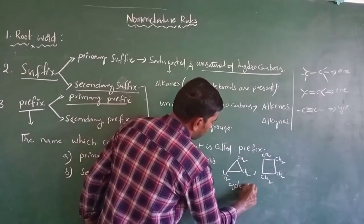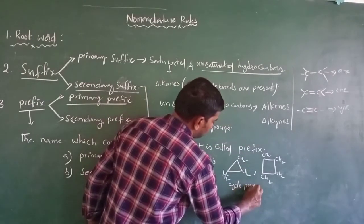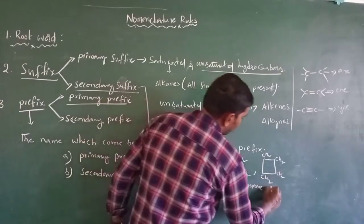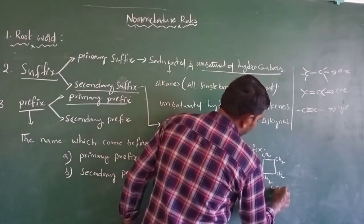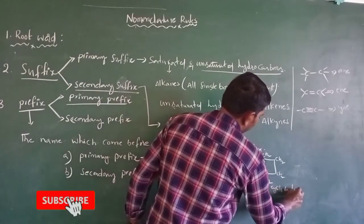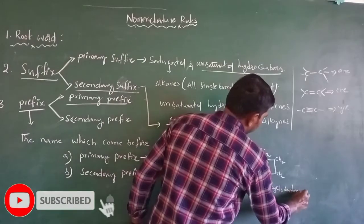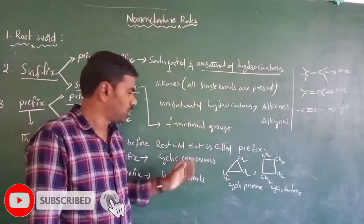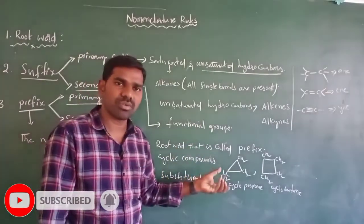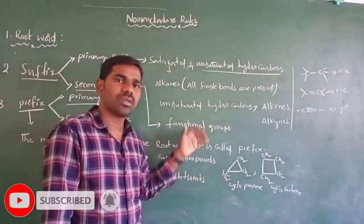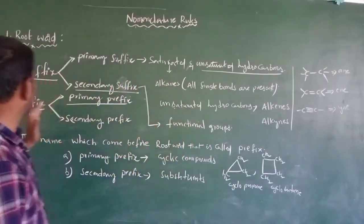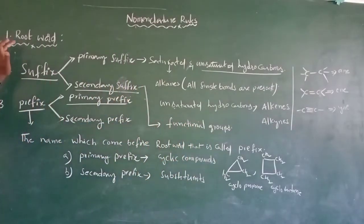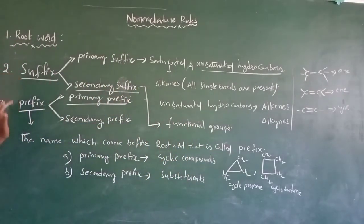For example, cyclic compounds: cyclopropane, cyclobutane — you can go and check the complete video. So this is root word, suffix, prefix.